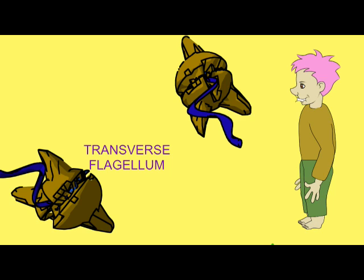One — the transverse flagellum — goes around the organism through the cingulum. It provides forward motion and spin.